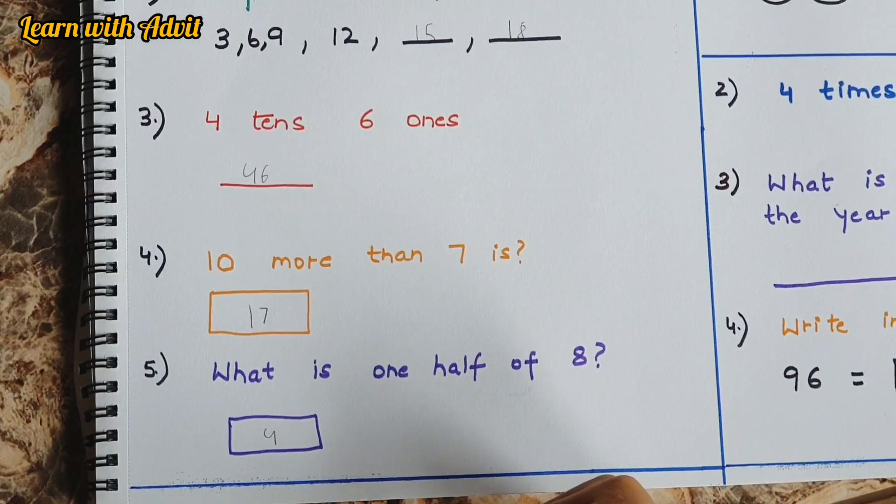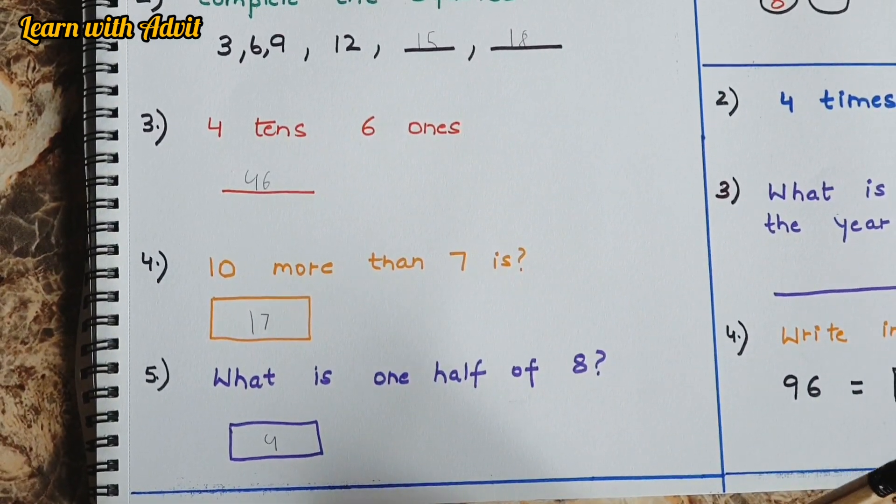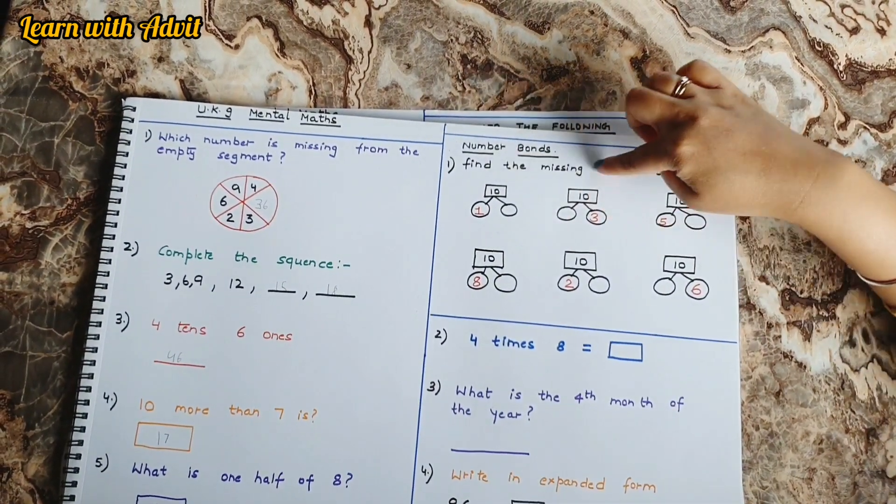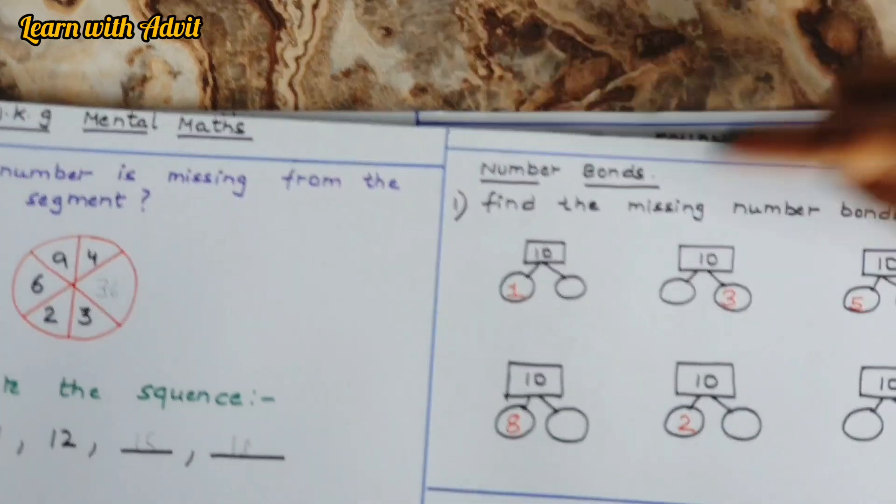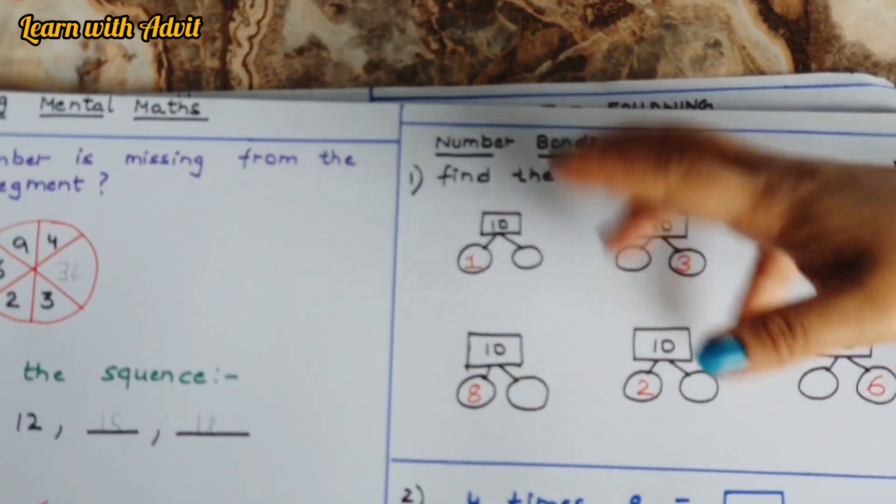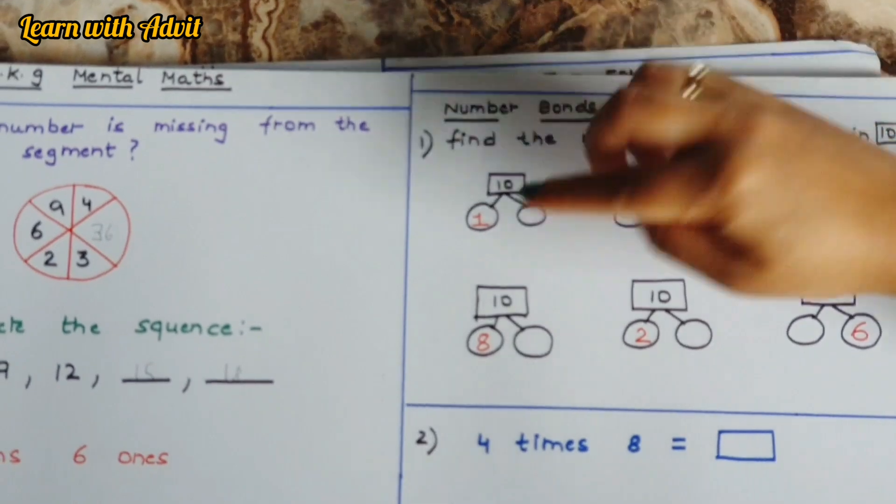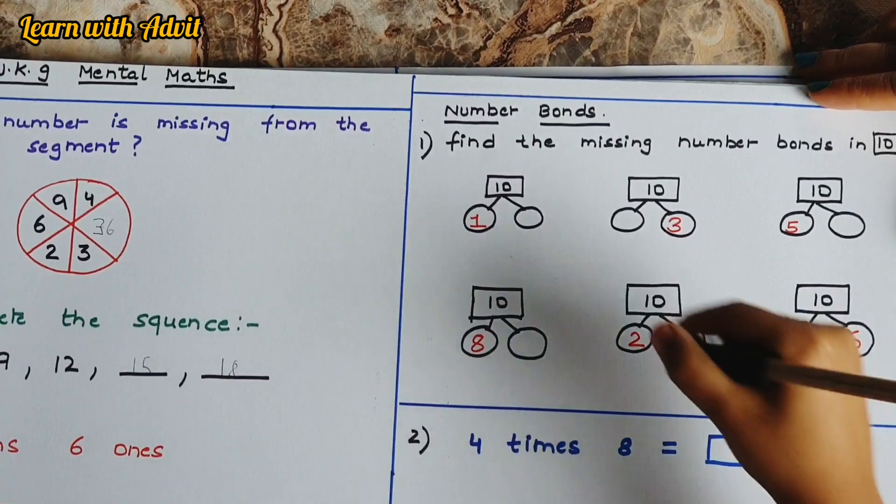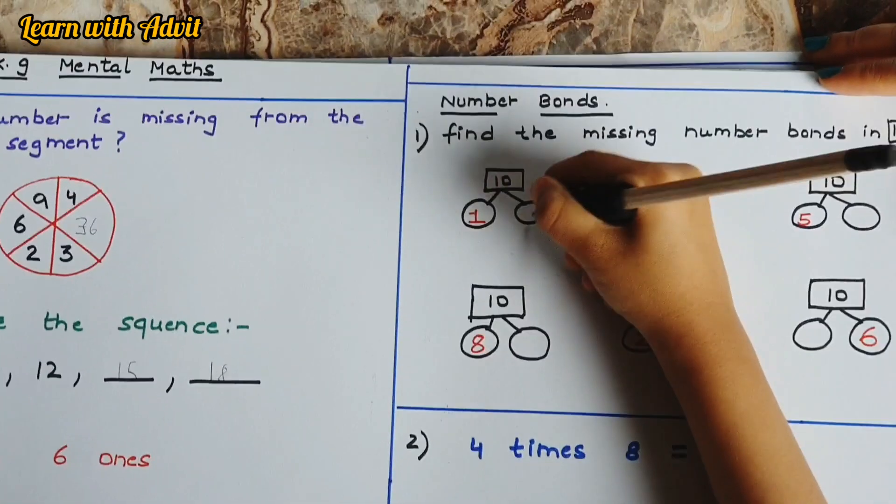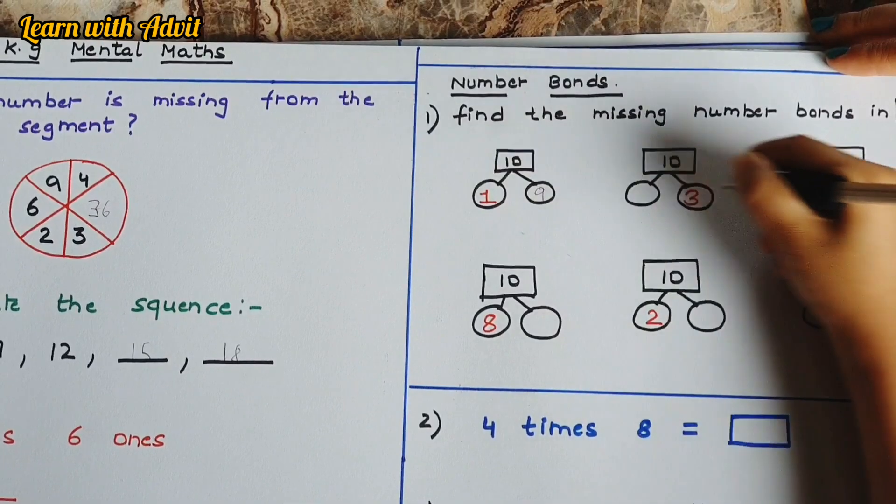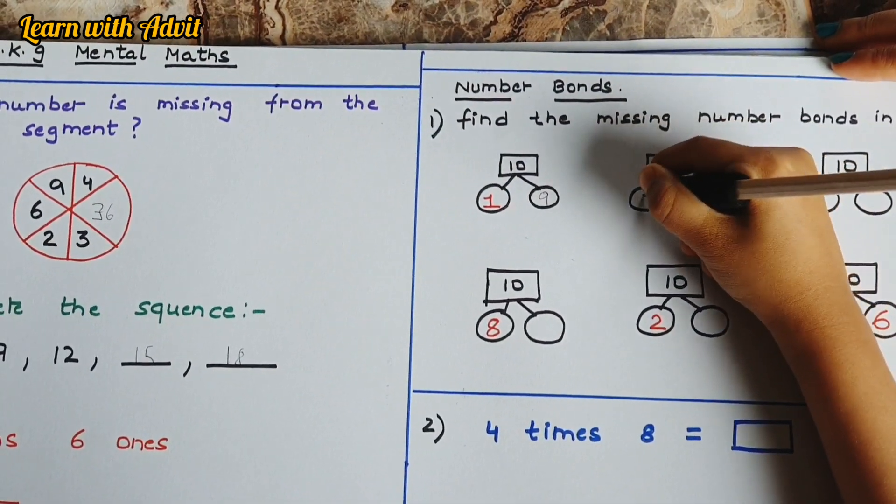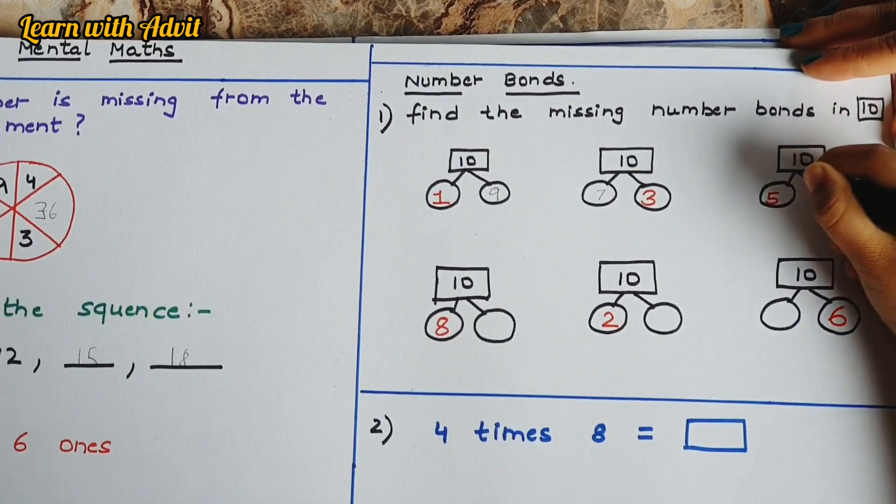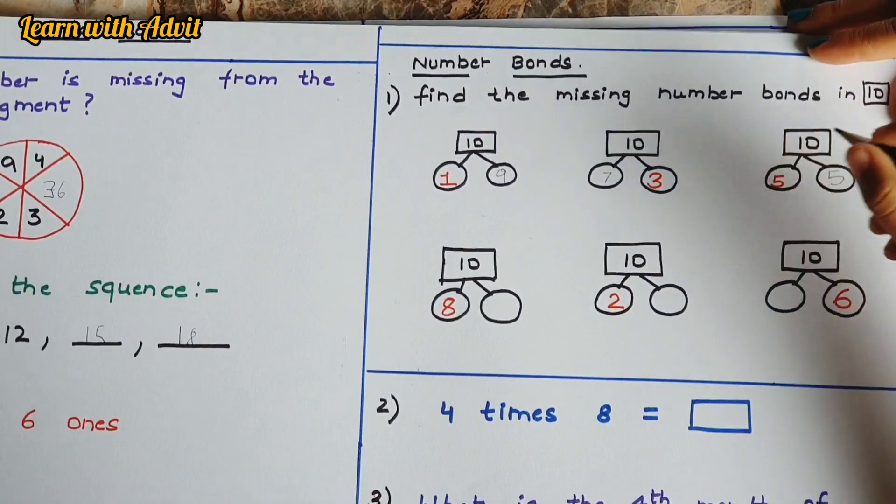So this is the question for the number bonds. Find the missing number bonds in 10. Here are 10, and how many ways we can make 10? So look at the number and do it accordingly. I know how to make 10. 1 plus 9 equals 10. 7 plus 3 equals 10. 5 and it's a double. 5 plus 5 is 10.